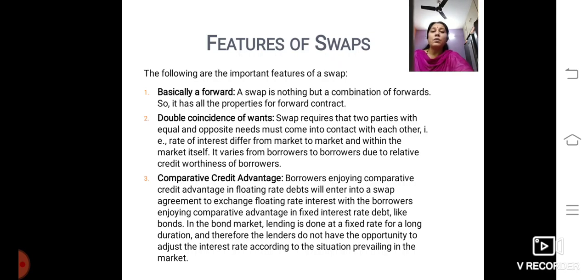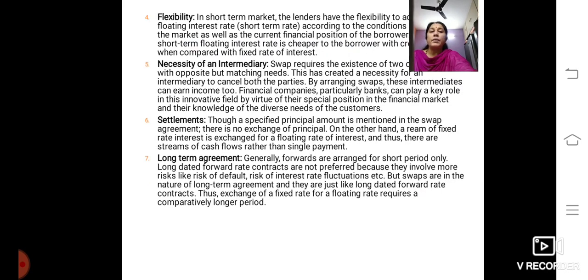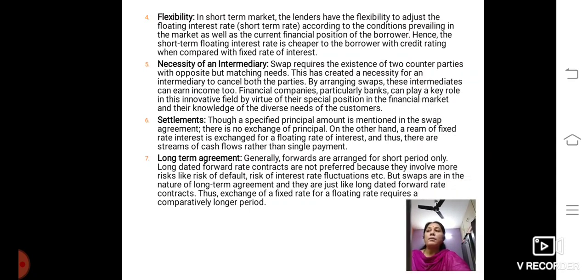The third feature is comparative credit advantage. Floating rate debts will enter into a SWAP agreement to exchange floating rate interest with the borrowers enjoying comparative advantage. So floating rate comparative advantage can be used when there are SWAP agreements. Then we have flexibility. In the short term market, the lenders have the flexibility to adjust the floating interest rates according to the conditions prevailing in the market as well as the current financial position of the borrower.